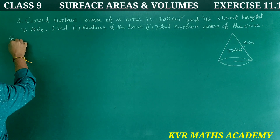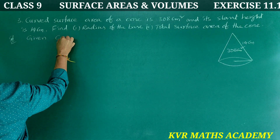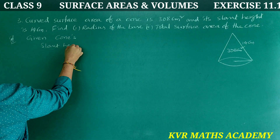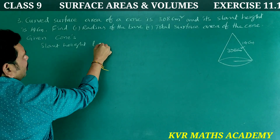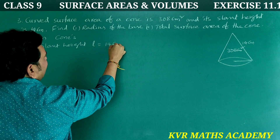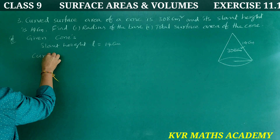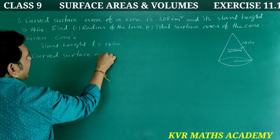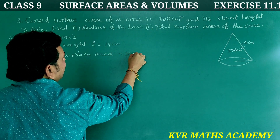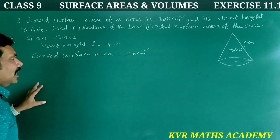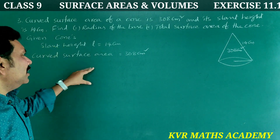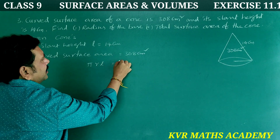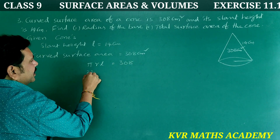Solution. Given: slant height L = 14 cm. The curved surface area of the cone uses the formula pi·R·L. So pi·R·L = 308. Using pi = 22/7, we have (22/7)·R·14 = 308.